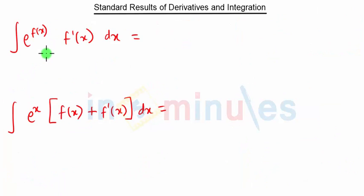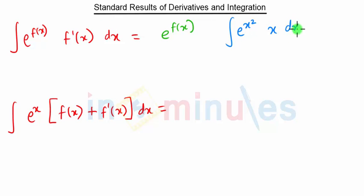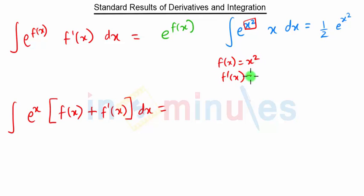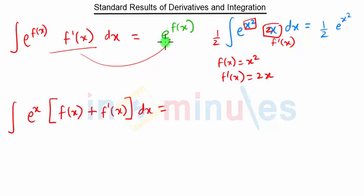The integration of e^(f(x)) · f'(x) is simply e^(f(x)). For example, for the integration of e^(x²) · x: taking f(x) = x², f'(x) = 2x. Since we have x (not 2x), we multiply and divide by 2. Applying the formula gives (1/2) e^(x²). This is the direct form to follow for complex integration problems involving exponentials.